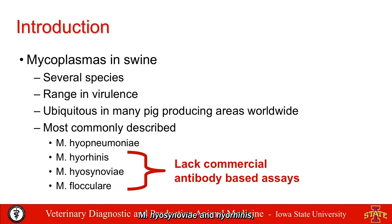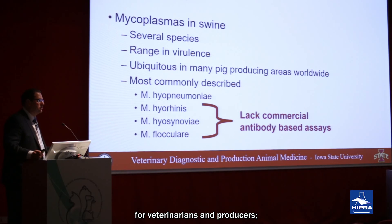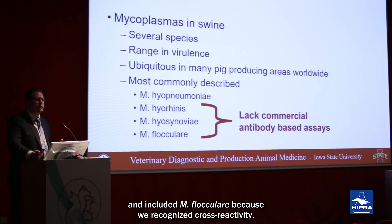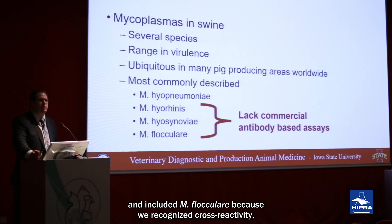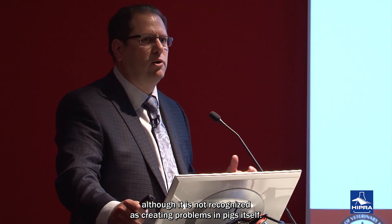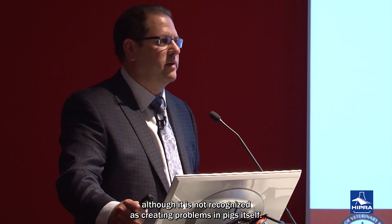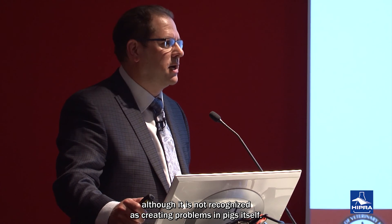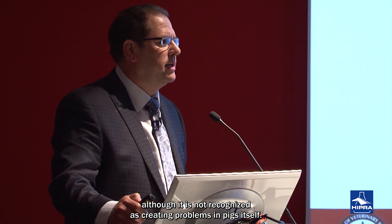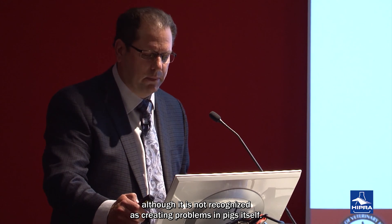Mycoplasma hyosynoviae and hyorhinis, which also cause lameness and have great implications in the field for veterinarians and producers. And then we included Mycoplasma flocculare because we recognize cross-reactivity, although Mycoplasma flocculare by itself is not recognized as really creating big problems in pigs.